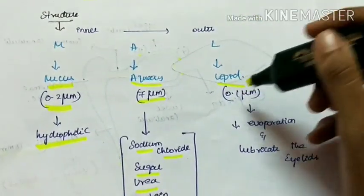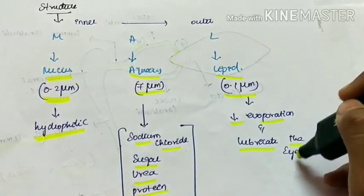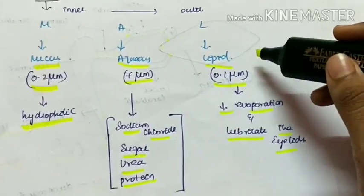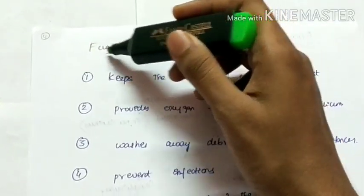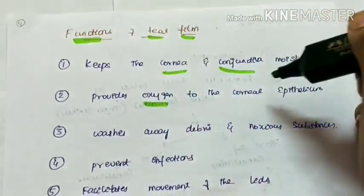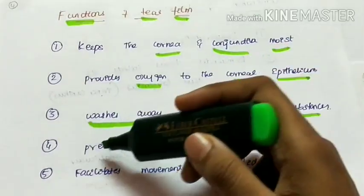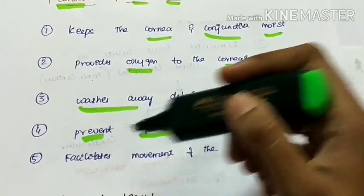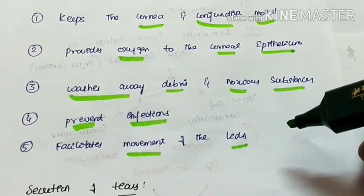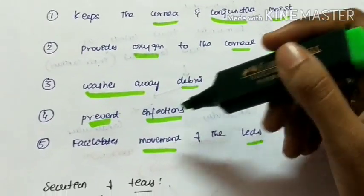The lipid layer is 0.1 micrometer in thickness. It decreases the evaporation of tears and lubricates the eyelids. The functions of the tear film are: it keeps the cornea and conjunctiva moist, provides oxygen to the corneal epithelium, washes away debris and noxious substances, prevents infections due to its antibacterial nature, and facilitates the movement of the lids.